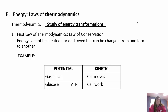Thermodynamics is the study of energy transformations. The first law of thermodynamics - the law of conservation - states that energy cannot be created or destroyed; it's changed from one form to another. So all we can do is transform energy. Solar energy goes to chemical energy, which goes to mechanical energy, for example. Potential energy in glucose can be used to make ATP, which can then be used to do the work of the cell.